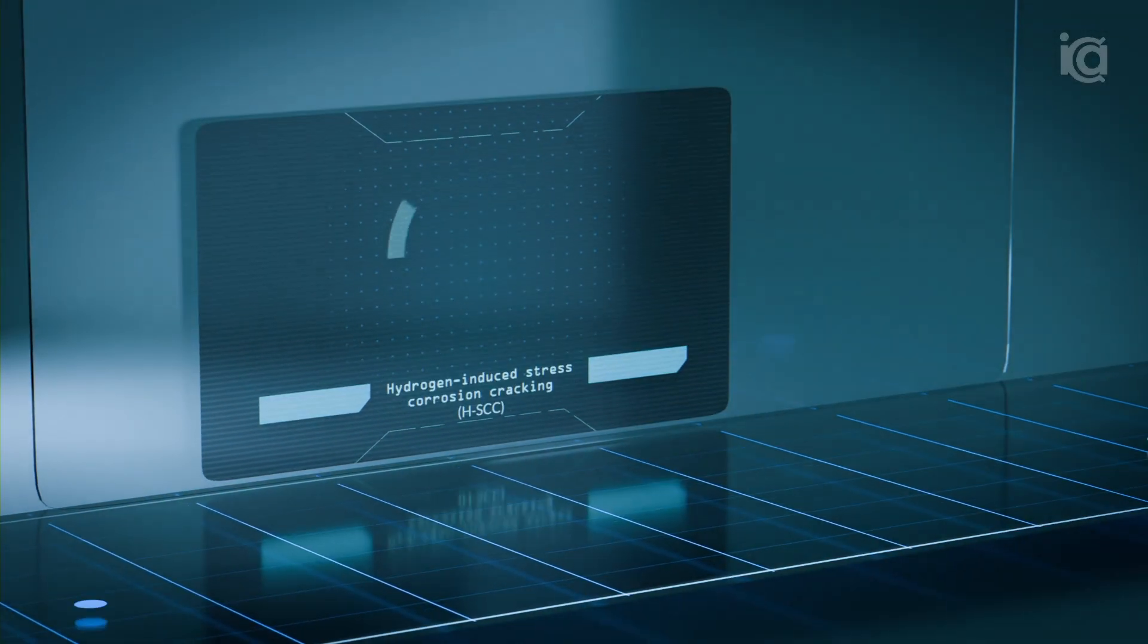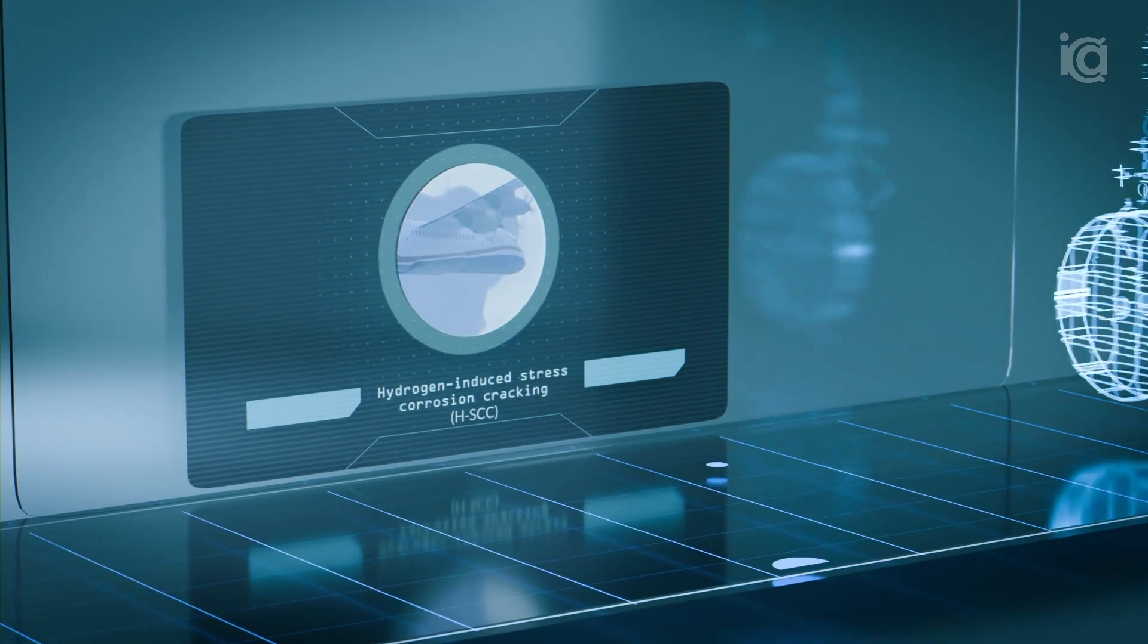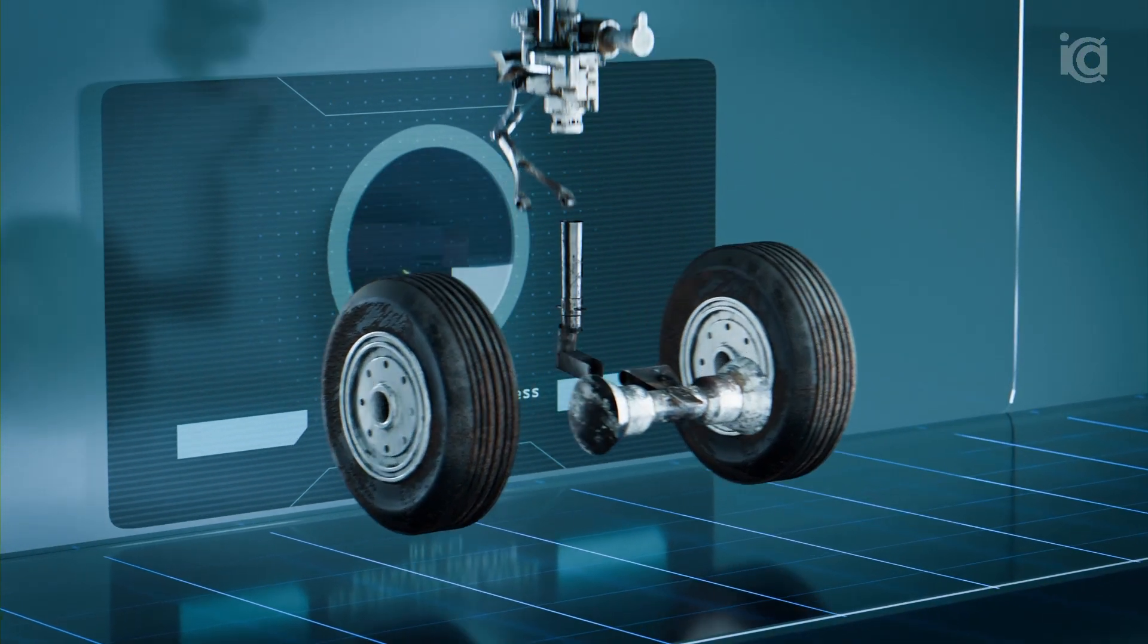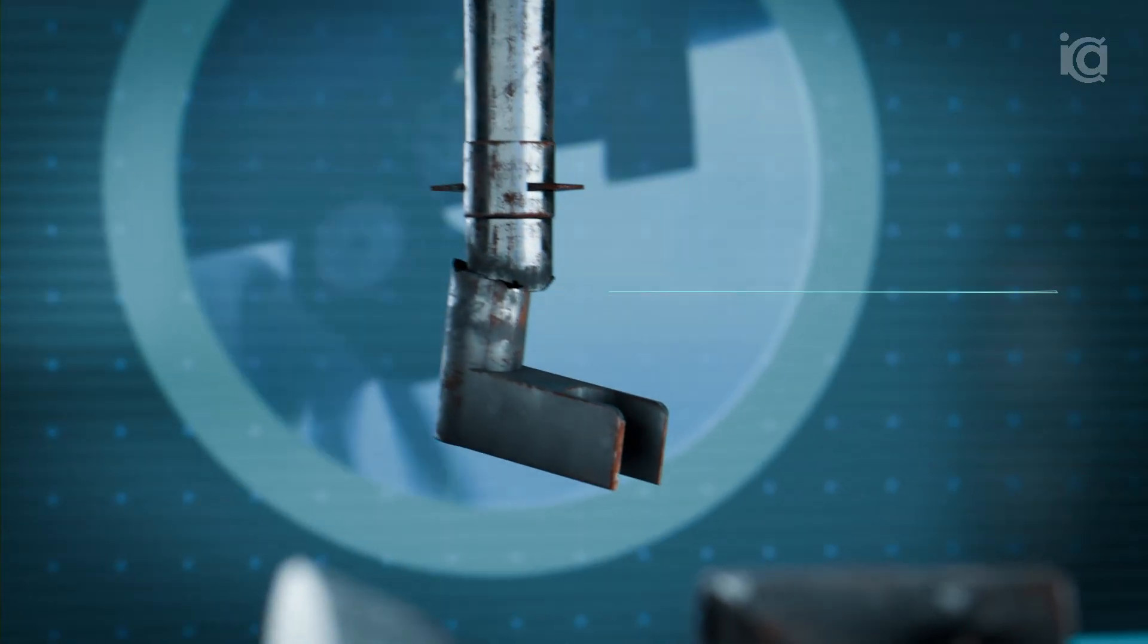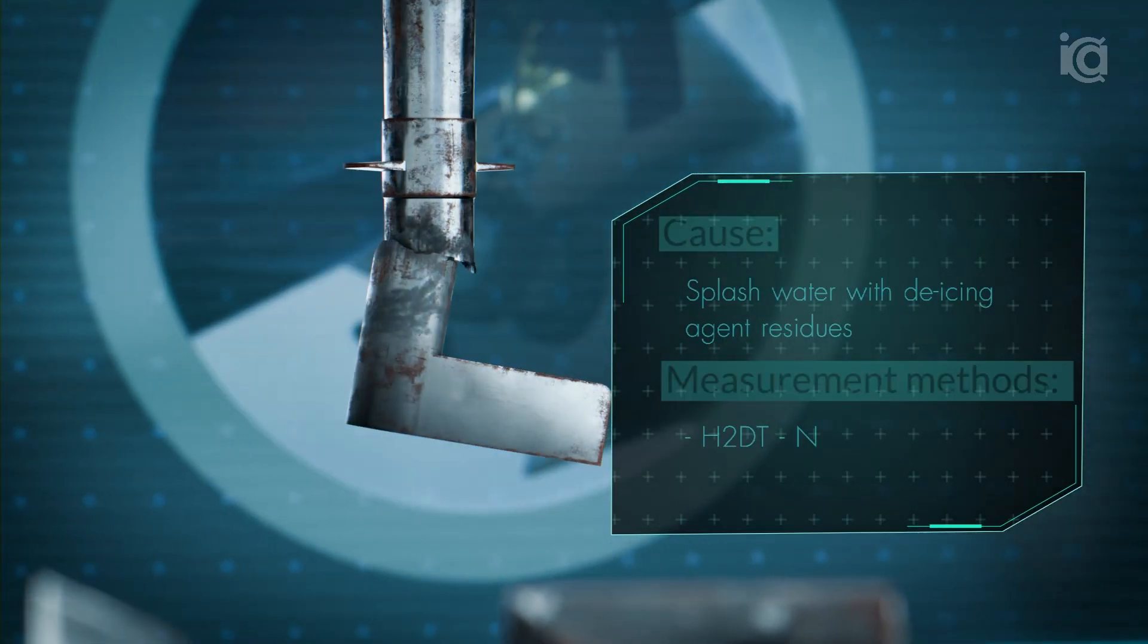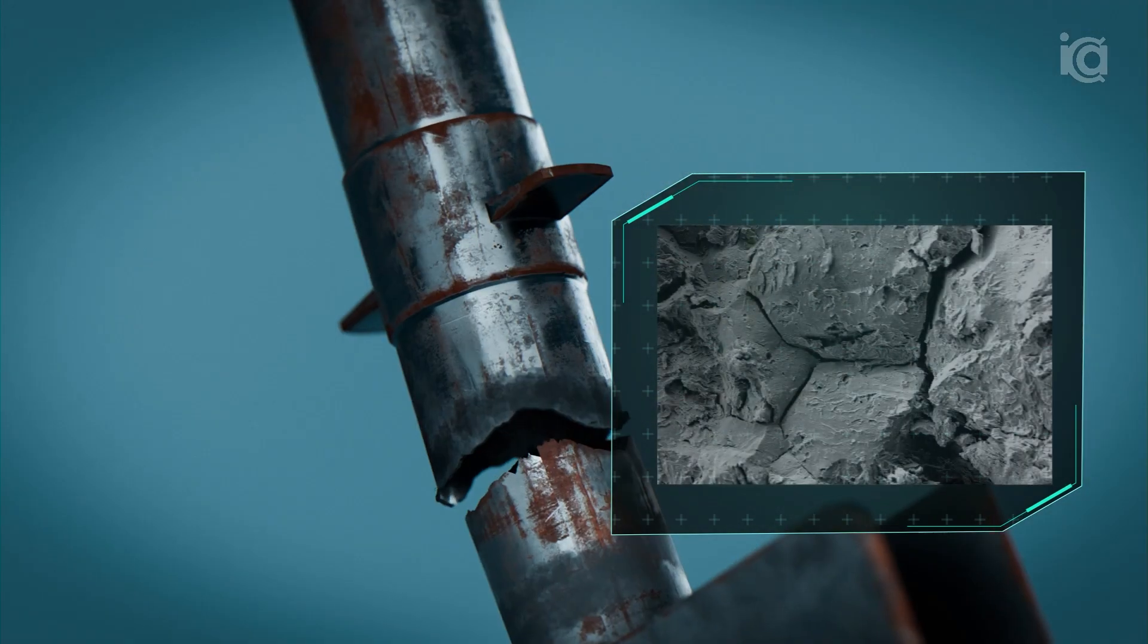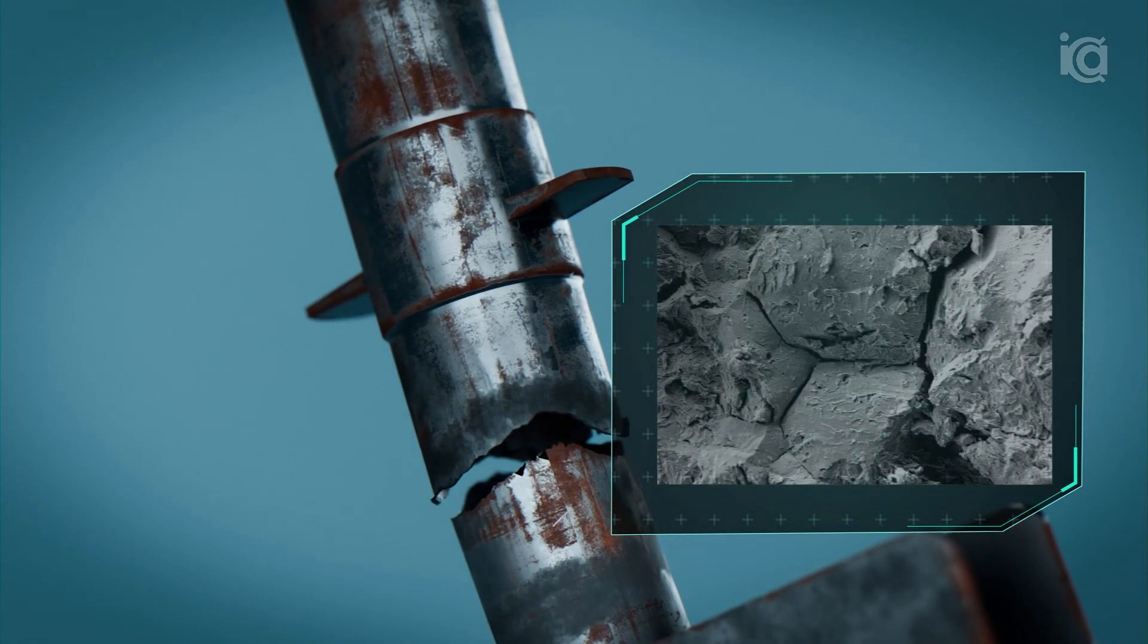One type of damage, known as hydrogen-induced stress corrosion cracking, involves the formation and propagation of fine cracks along grain boundaries or dislocations. These cracks grow under stress and can ultimately cause sudden component failure.